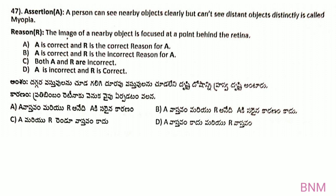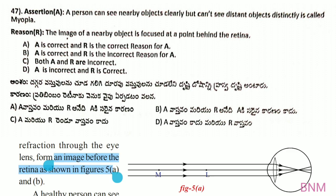Assertion A: a person can see nearby objects clearly, but cannot see distant objects clearly. The image of a nearby object is focused at a point behind the retina — this statement is wrong. The myopia defect means the image is formed before the retina, not behind it. So the reason R is wrong. Assertion A is correct, R is wrong.